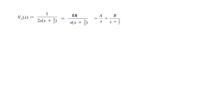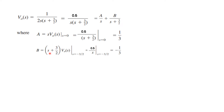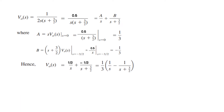Writing in partial fraction form: A/S + B/(S+3/2). By the residue method, A = S · V_out(S) evaluated at S=0, which gives 1/3. For B, we multiply by (S+3/2) and evaluate at S = −3/2, giving B = −1/3. Putting the values of A and B back into the equation and simplifying, we get the expression ready for the inverse Laplace transform.